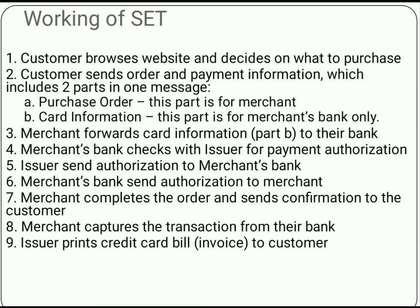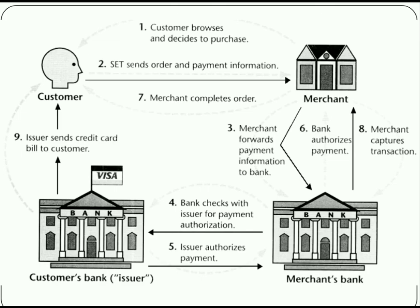Now let's look at how SET works. You can clearly understand it from the diagram. The actors are: customer, merchant, acquirer (merchant's bank), and issuer (customer's bank). In the first step, the customer browses and decides to purchase a product. From that point onwards, SET starts to work.